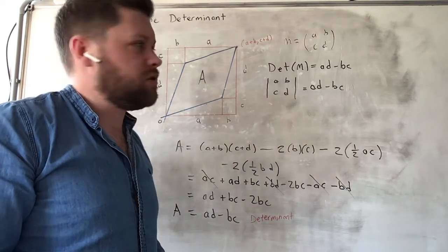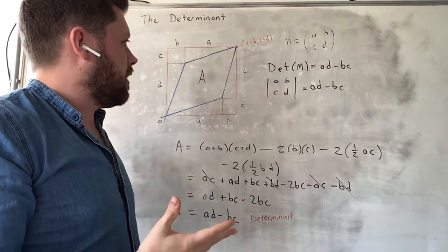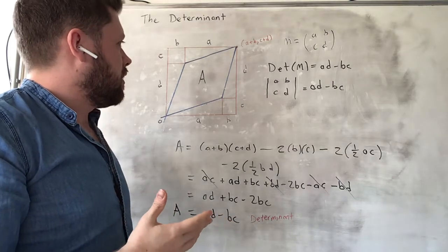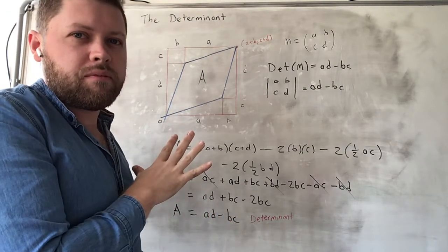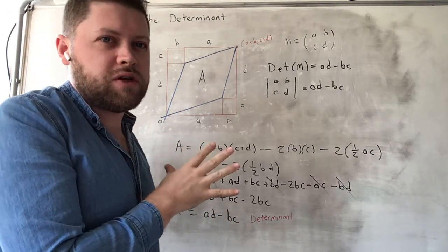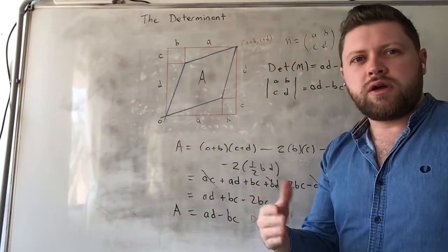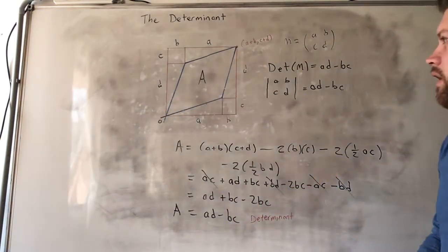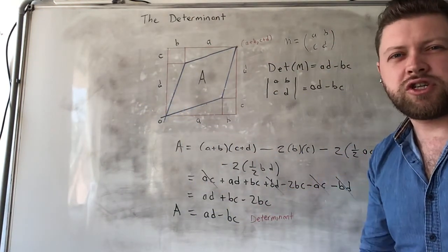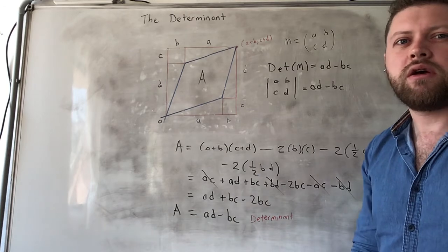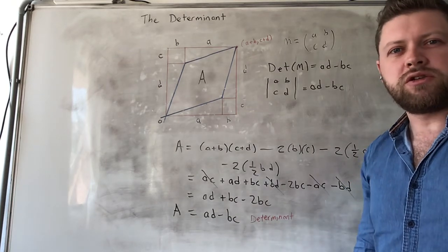The determinant is related to the area of the parallelogram after transformation. It gives you a measure of the change in area under the transformation.